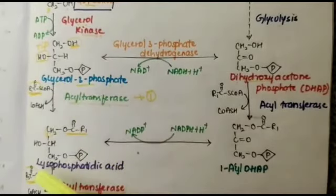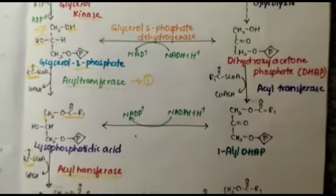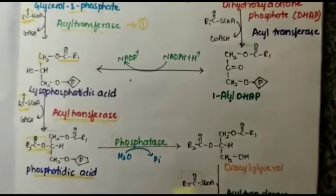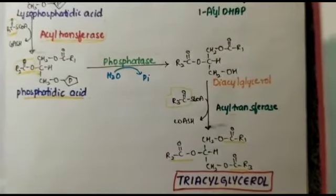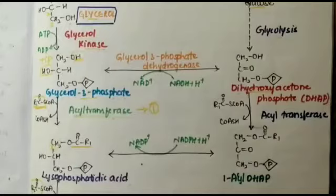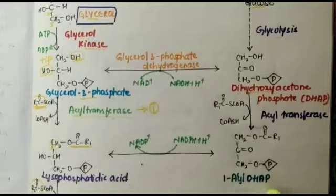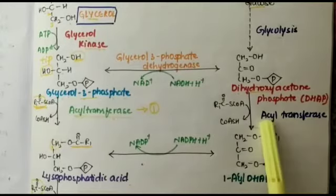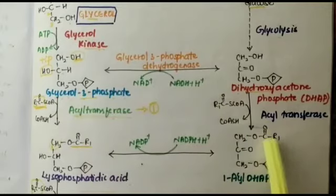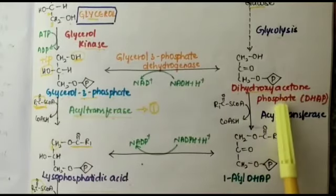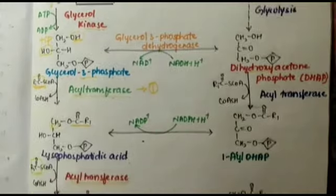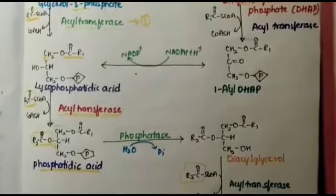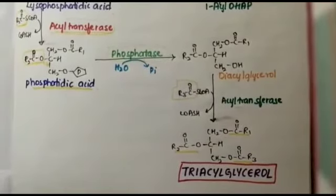There is also another method where dihydroxyacetone phosphate converts into acyl-dihydroxyacetone phosphate by an acyltransferase enzyme, where one acyl group transfers to the first OH group of DHAP. It then enters the glycerol pathway and converts into lysophosphatidic acid, then phosphatidic acid, then diacylglycerol, and finally triacylglycerol.